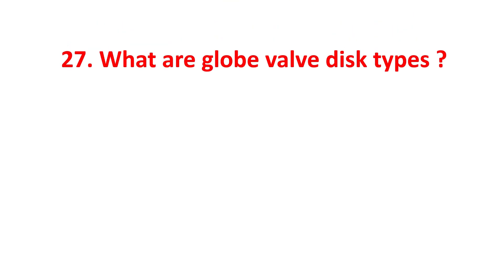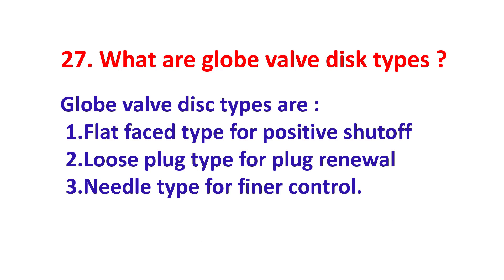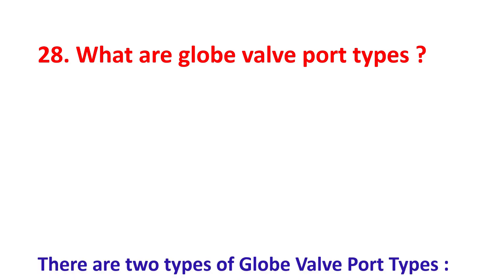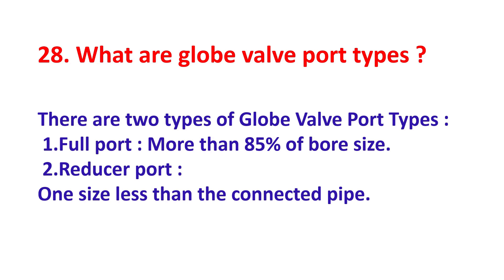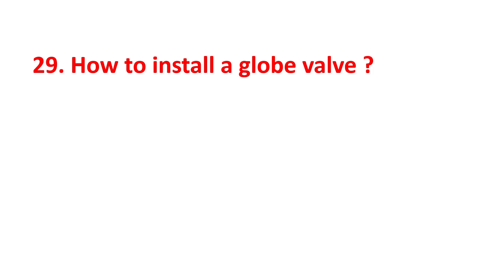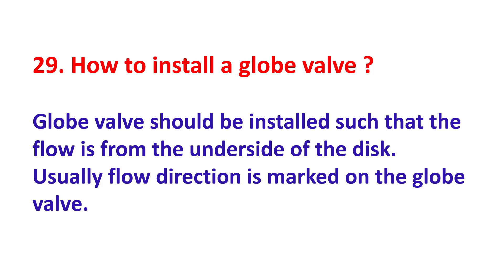What are globe valve disc types? Globe valve disc types are: flat-faced type for positive shut-off, loose plug type for plug renewal, and needle type for finer control. What are globe valve port types? There are two types: full port, more than 85% of bore size, and reduced port, one size less than the connected pipe. Globe valves should be installed such that flow is from the underside of the disc. Usually, the flow direction is marked on the globe valve.